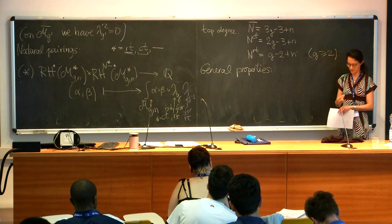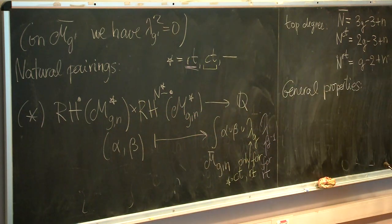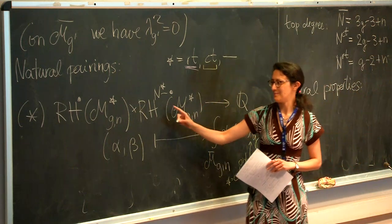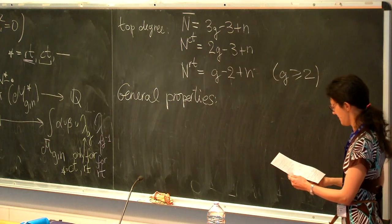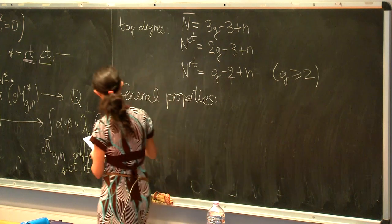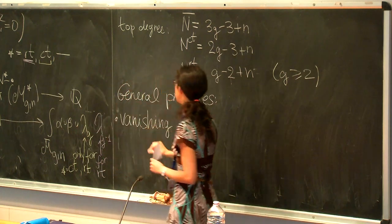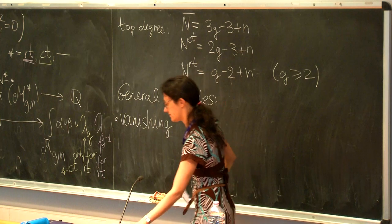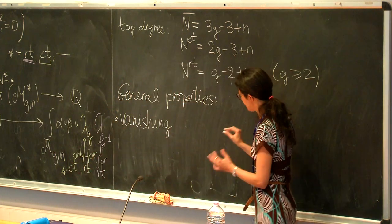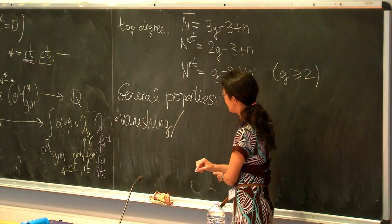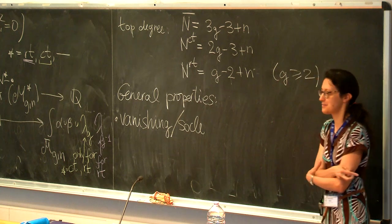This is a good candidate to have a perfect pairing, but we know that in the most intuitive case the evidence goes in a different direction. The kind of structure conjectured for Mg by Faber gave rise to conjectures also in these cases, and two of them are now known to hold — so now they are properties and not conjectures. The first is the vanishing and socle property.